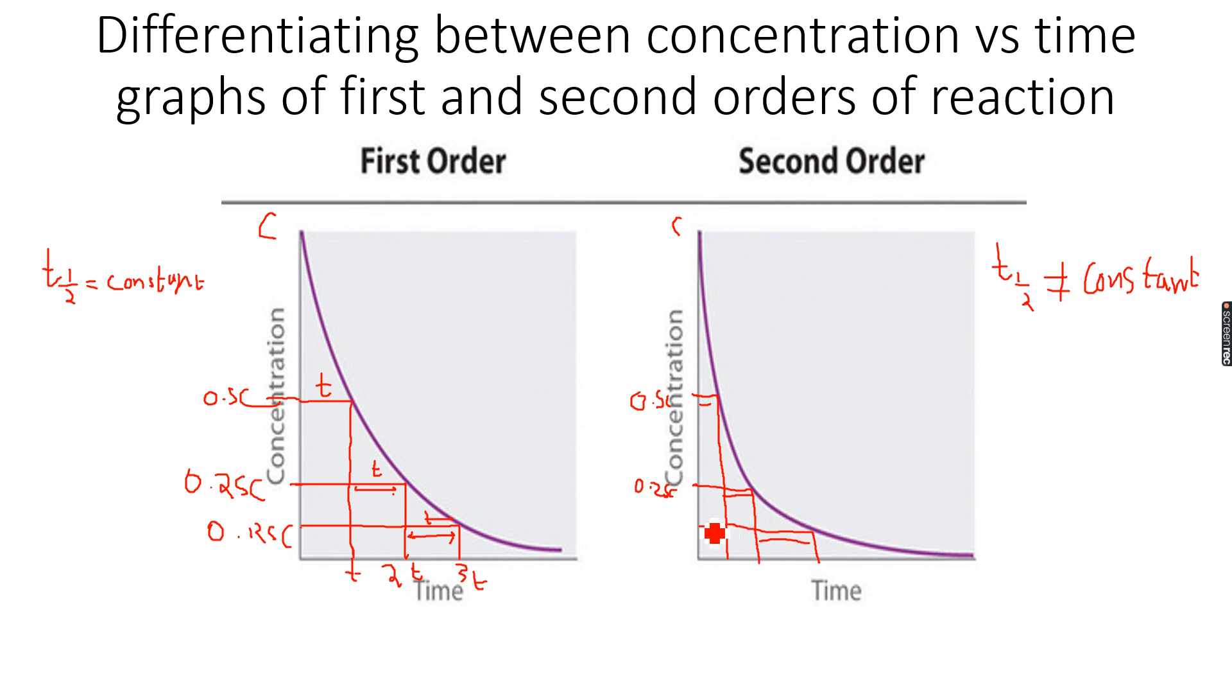So if we have to relate it to the rate constant, t half, which is the half-life for a first-order reaction, is equal to ln2, which is natural logarithm of 2, over k, where k is the rate constant. So the half-life for a first-order reaction can be calculated using this formula.